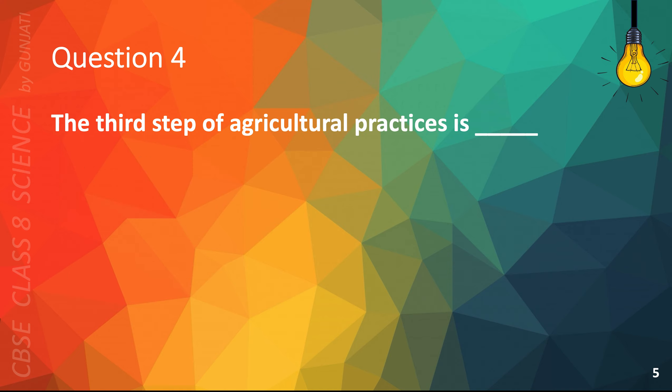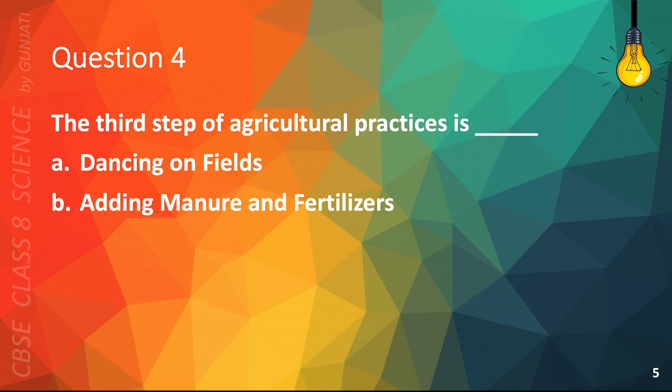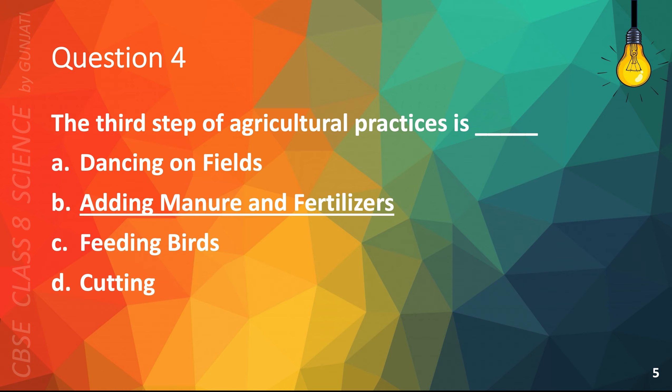Question 4. The third step of agricultural practices is: A. Dancing on fields, B. Adding manure and fertilizers, C. Feeding birds, or D. Cutting. The correct answer is B. Adding manure and fertilizers.